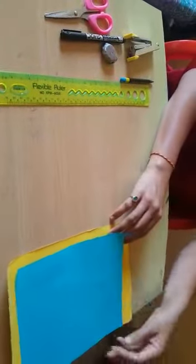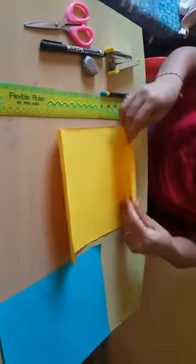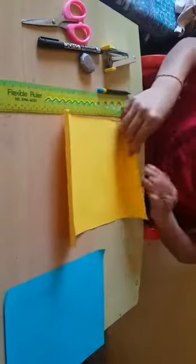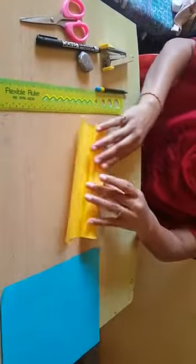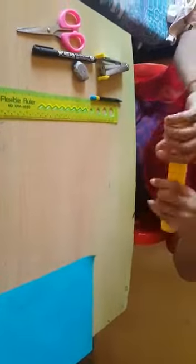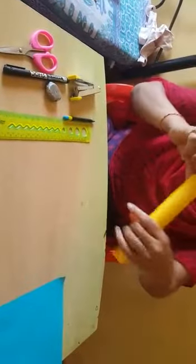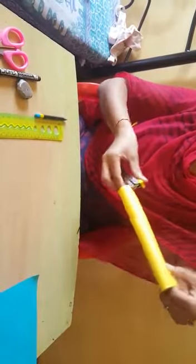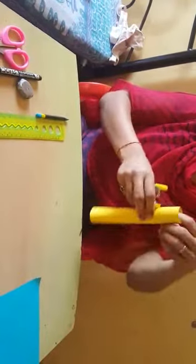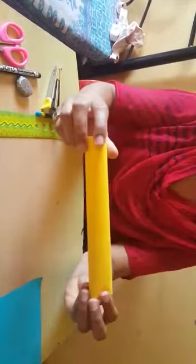So let's start to do the activity. First we will take one paper and we make it roll. Make one roll. See, I will staple here on both sides. And now the roll is ready.